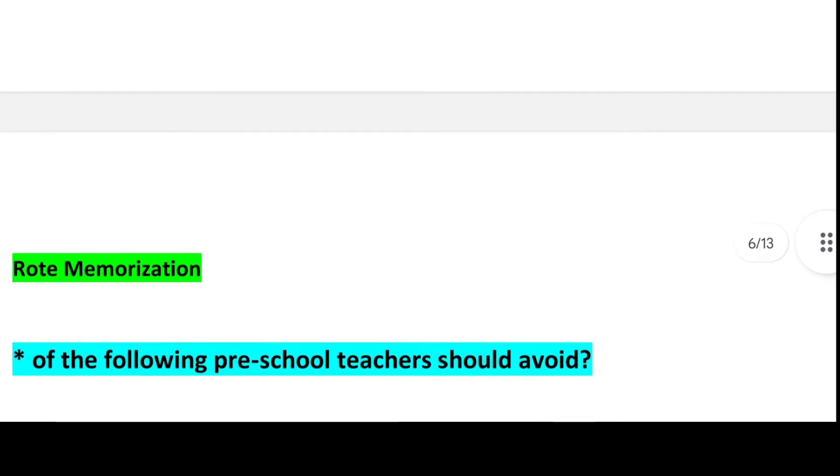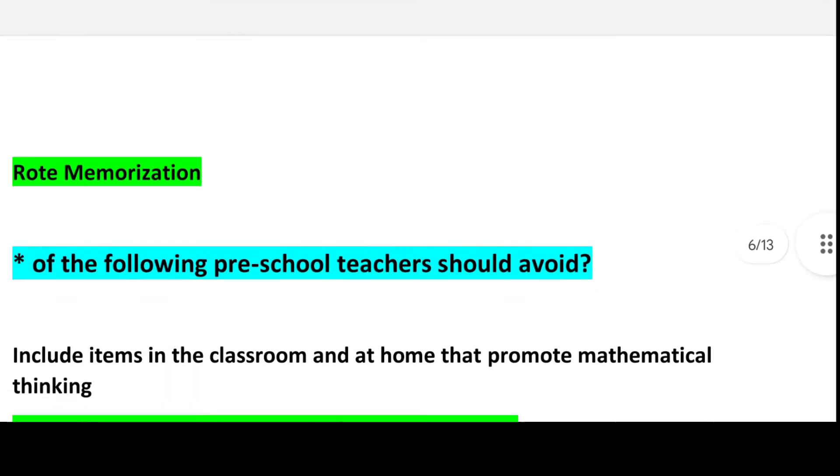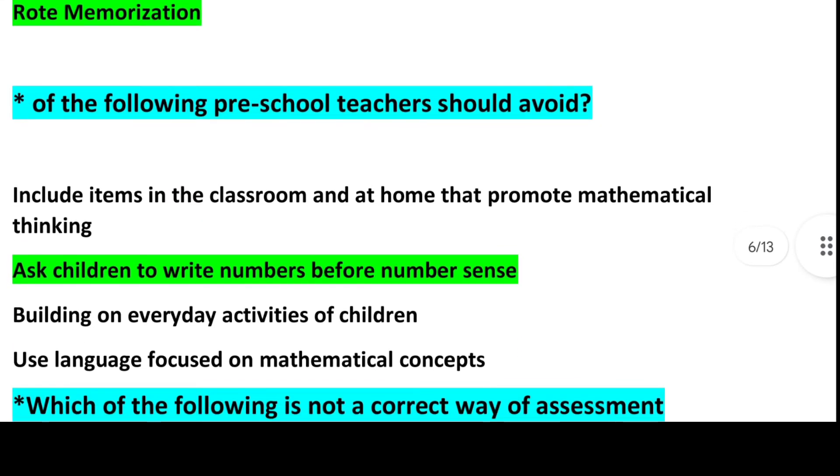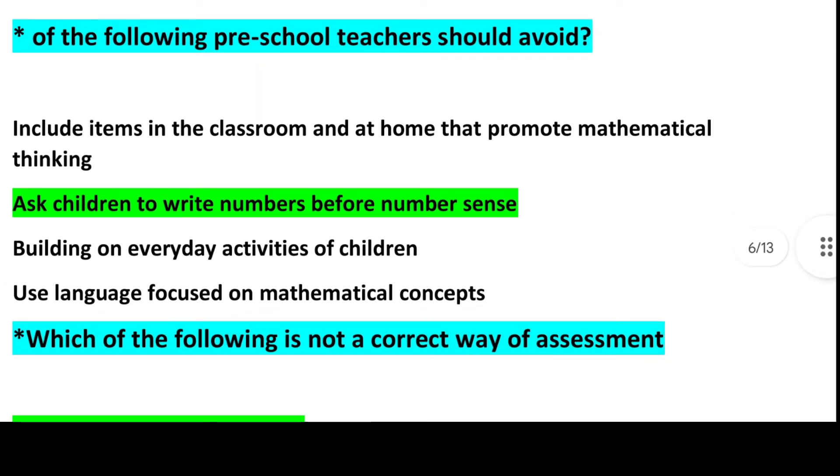Next question: Numbers are used to describe the position of an object when they are arranged in a specific order. These numbers are called. Option 1, Ordinal numbers will be the answer. Next question: Which of the following is not a mathematical process? Answer is Option 4, Rote memorization. Next question: Which of the following pre-school teachers should avoid? Answer is Option 2, Ask children to write numbers before number sense.